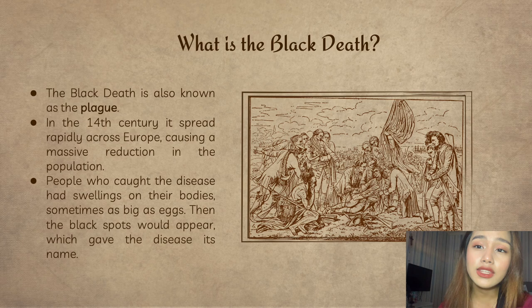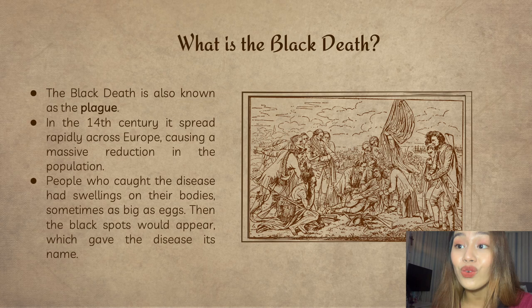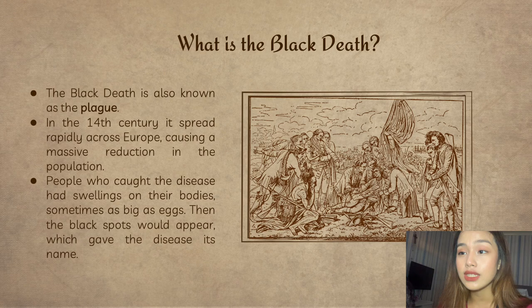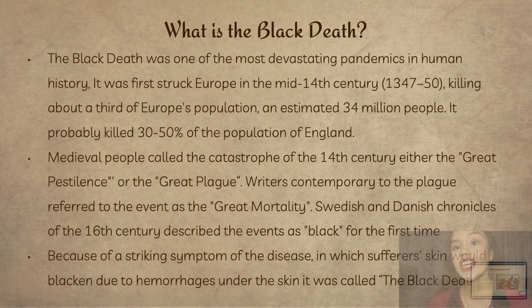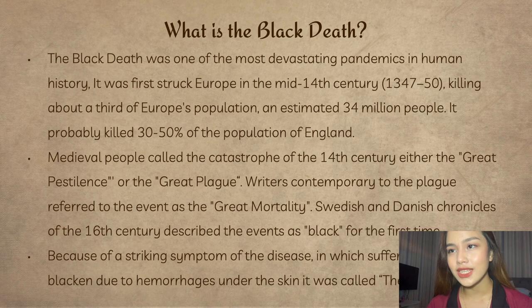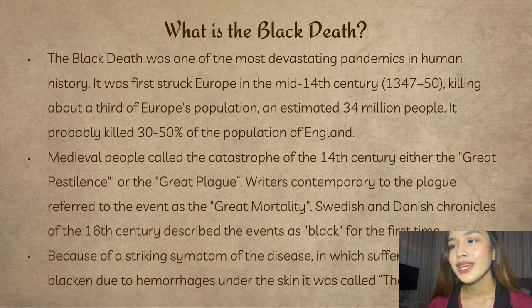The Black Death spread rapidly across the globe, causing a massive reduction in the population. People who caught the disease had swellings on their bodies, sometimes as big as eggs, and then black spots would appear, which gave the disease its name. This was one of the most devastating pandemics in human history, first striking Europe in the mid-14th century — 1347 to 1351 — killing about a third of Europe's population, an estimated 34 million people.